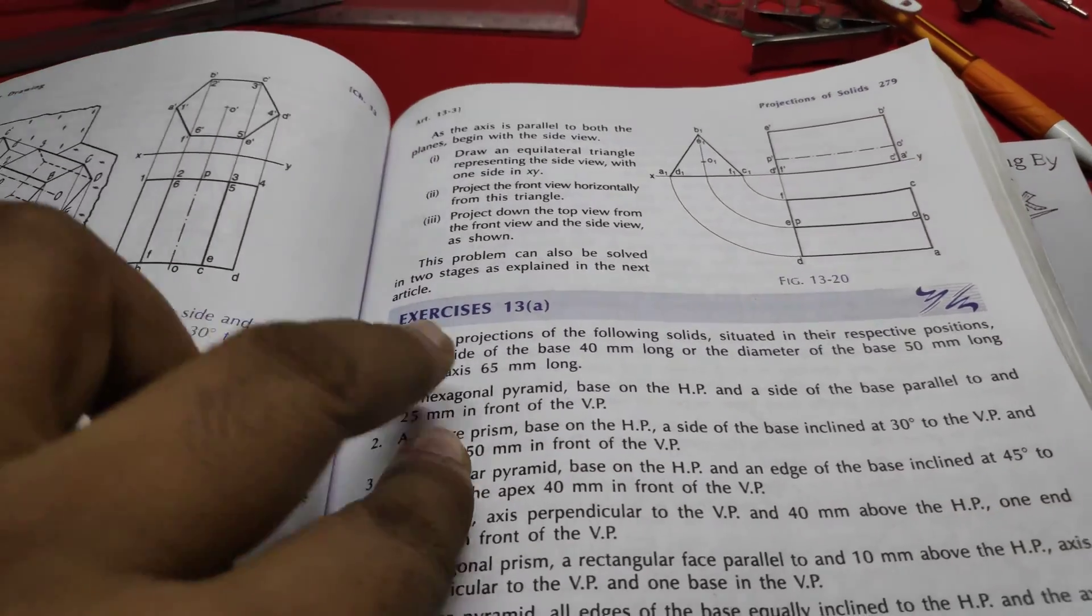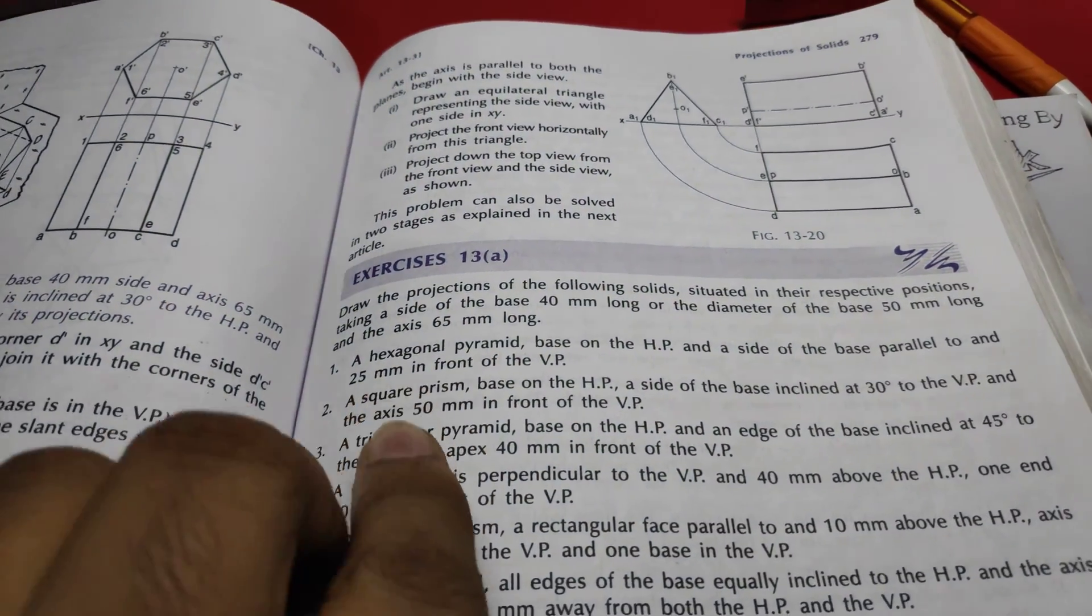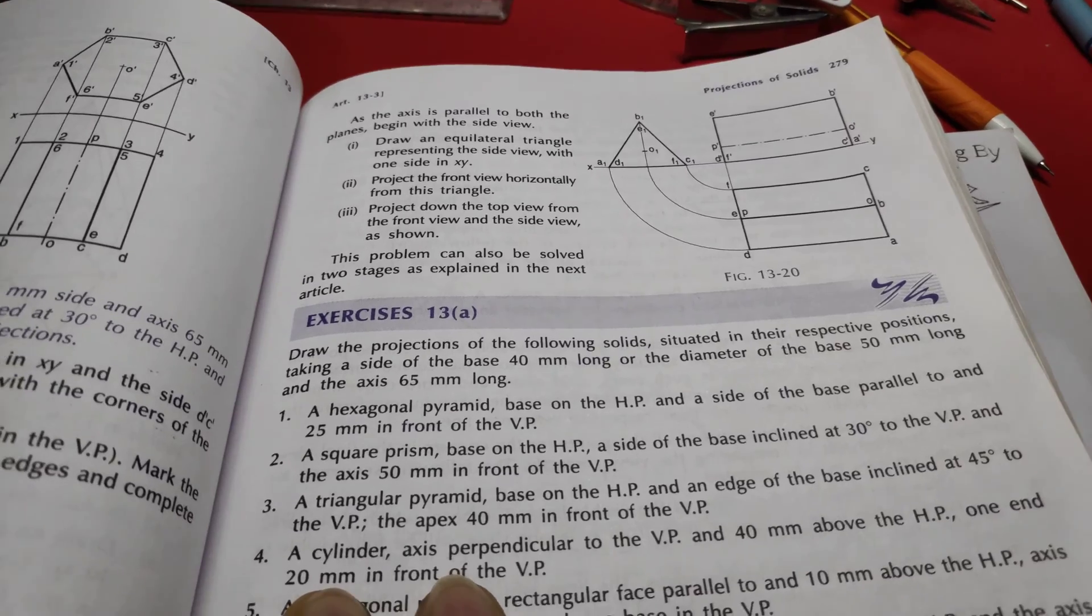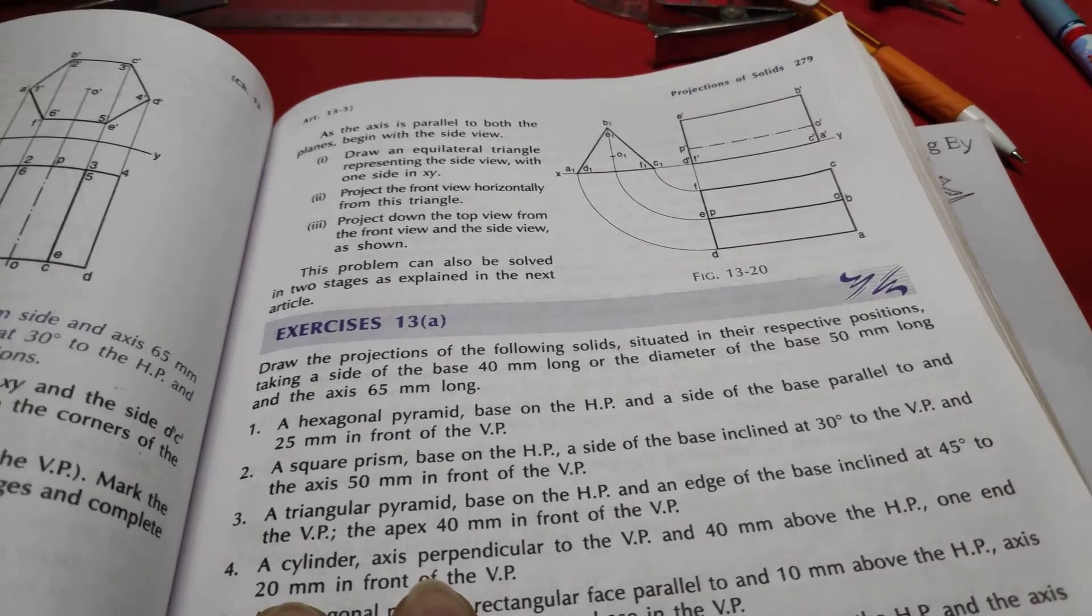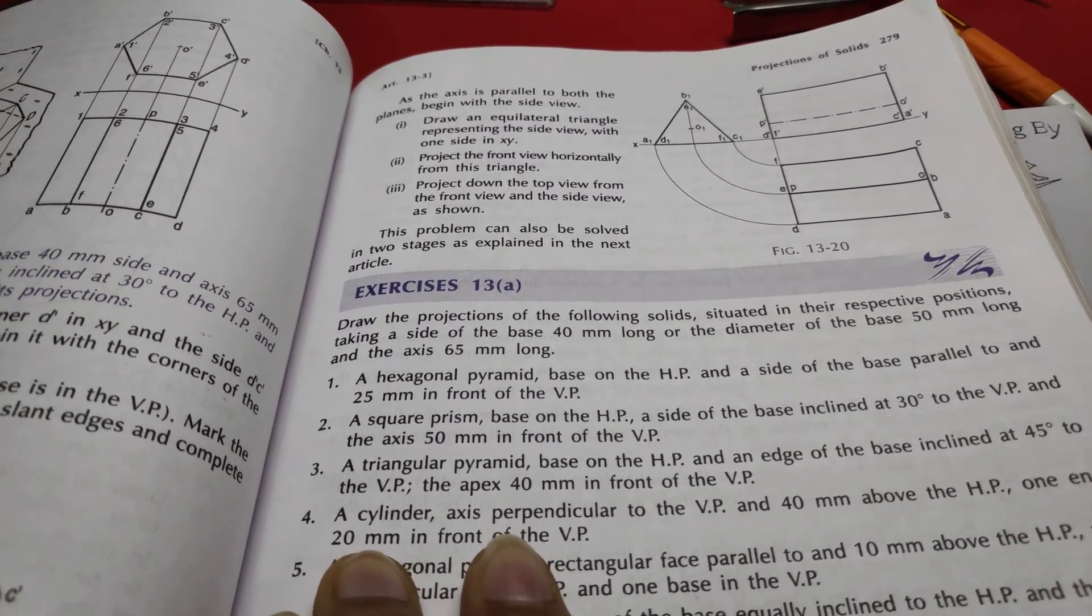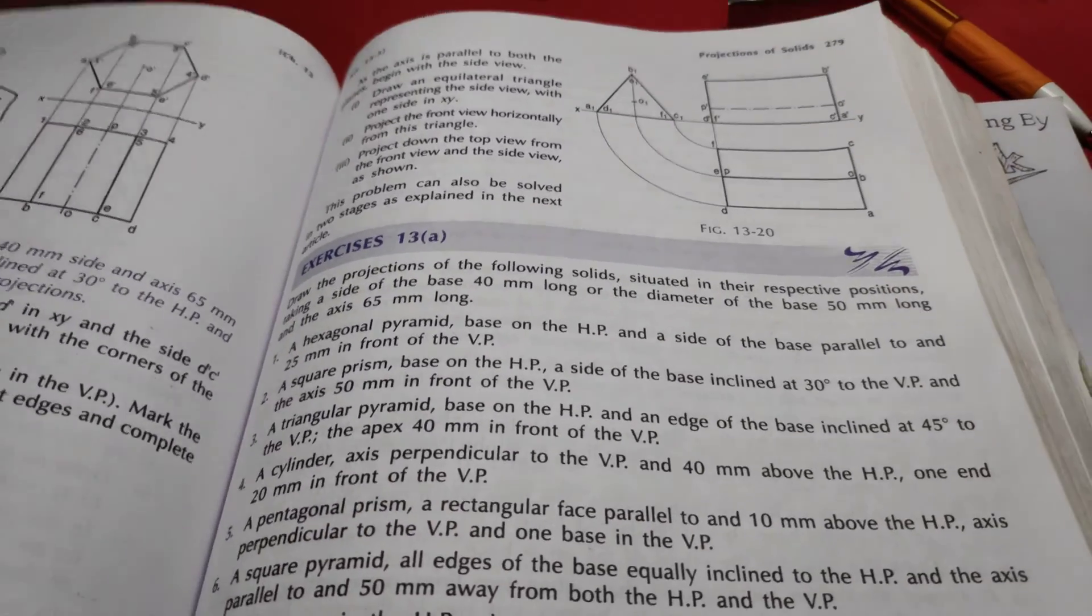I am considering a question from exercise 13a, first problem: A hexagonal pyramid based on HP and a side of base parallel to and 25 mm in front of VP. So let's start with the problem.